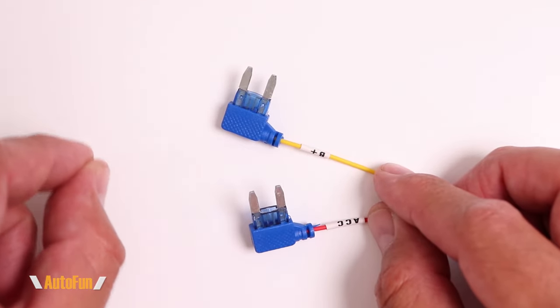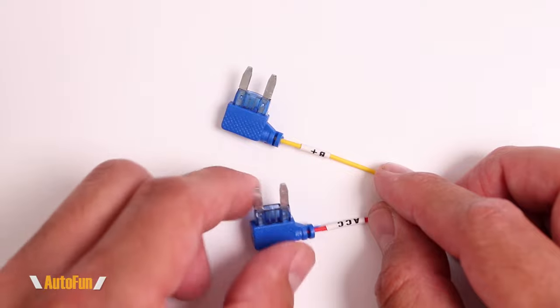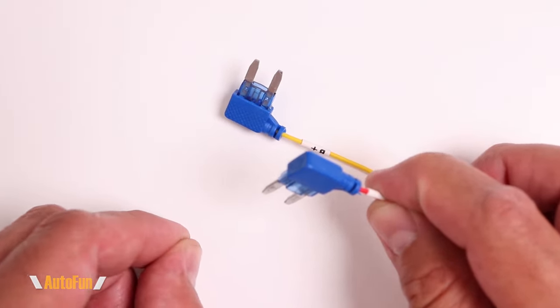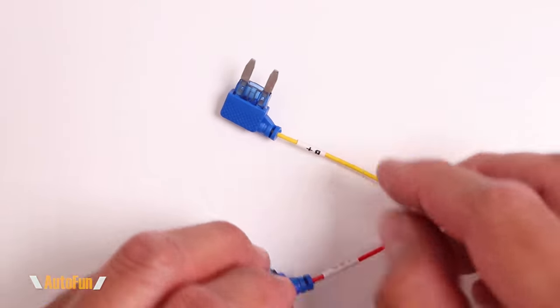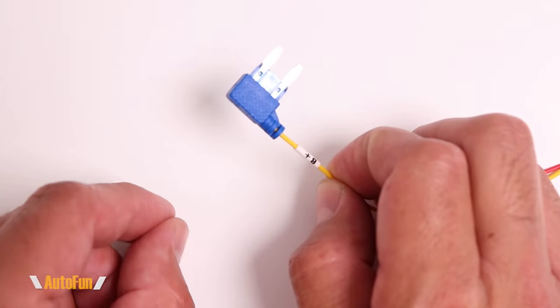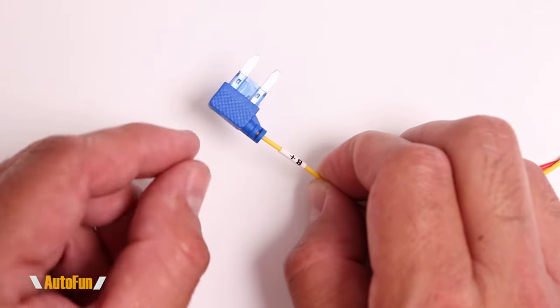I have to find an empty spot in the fuse box of the vehicle that provides ACC power, and once I find that source and it's empty, I can insert this in there and I have ACC power. Then I'll repeat the same process for the B plus.